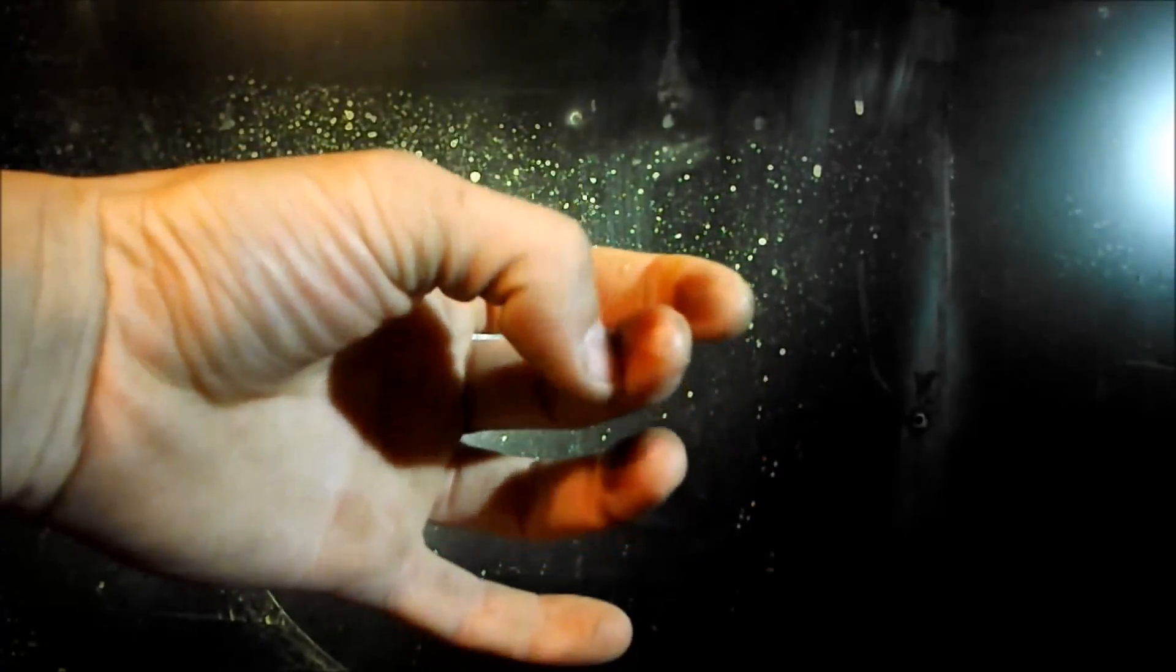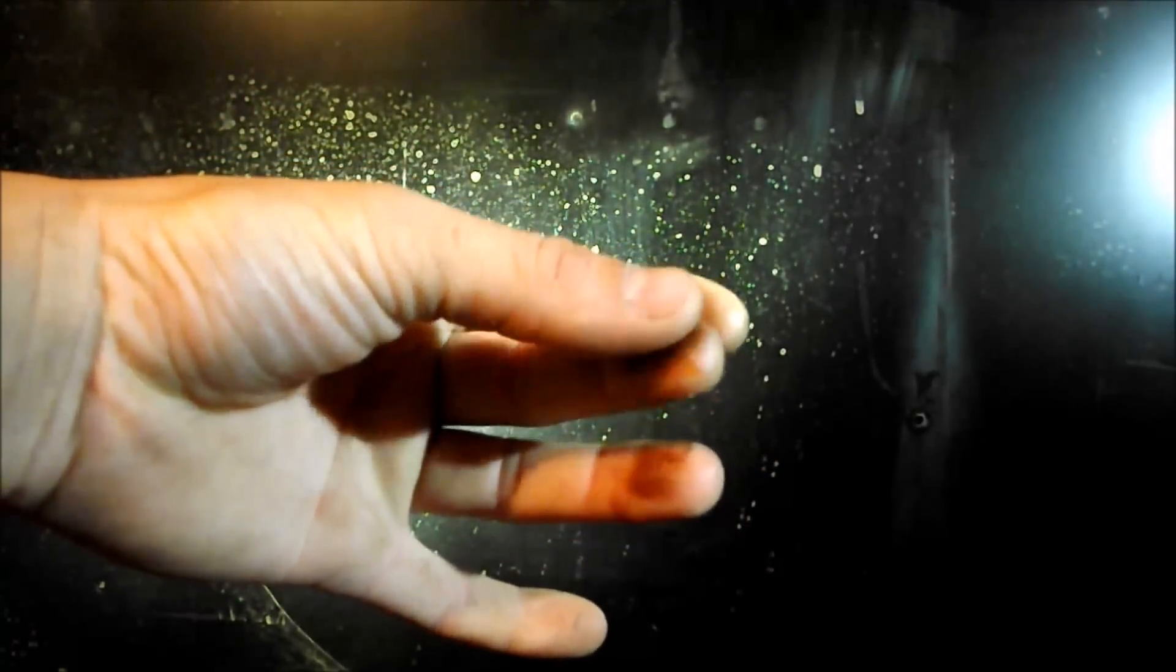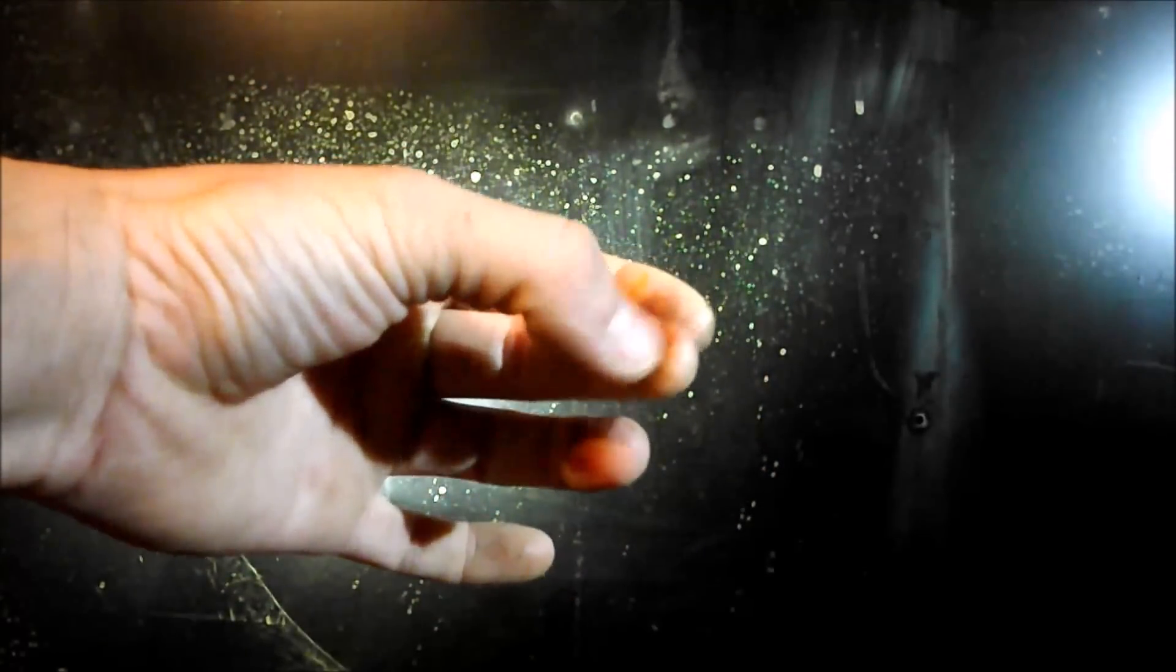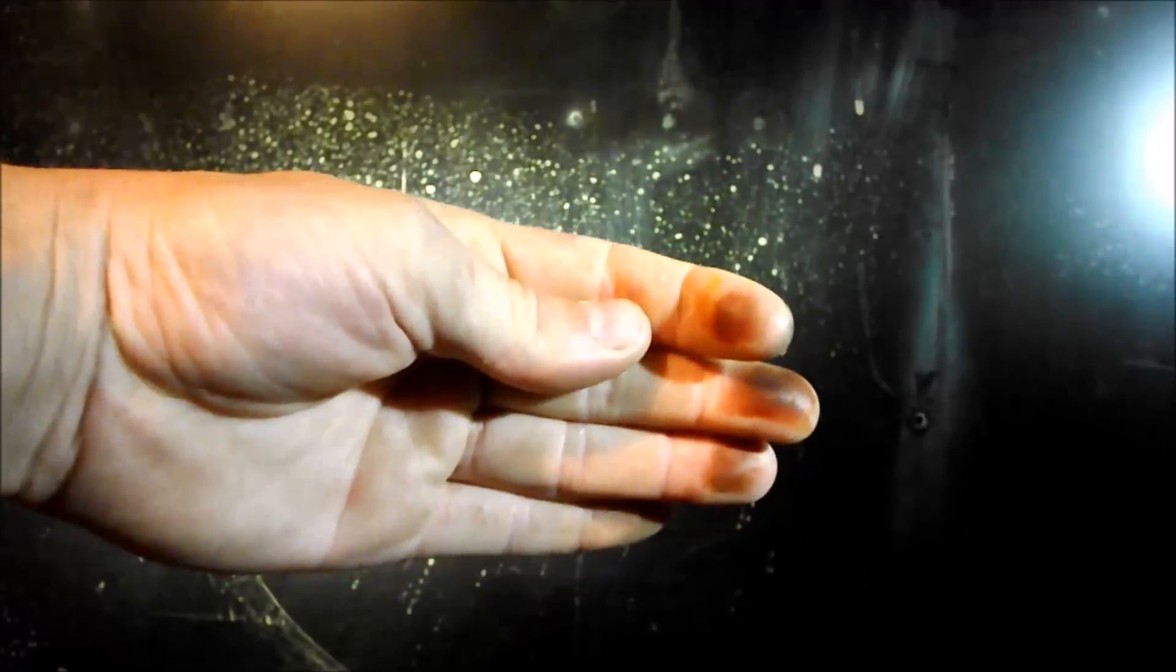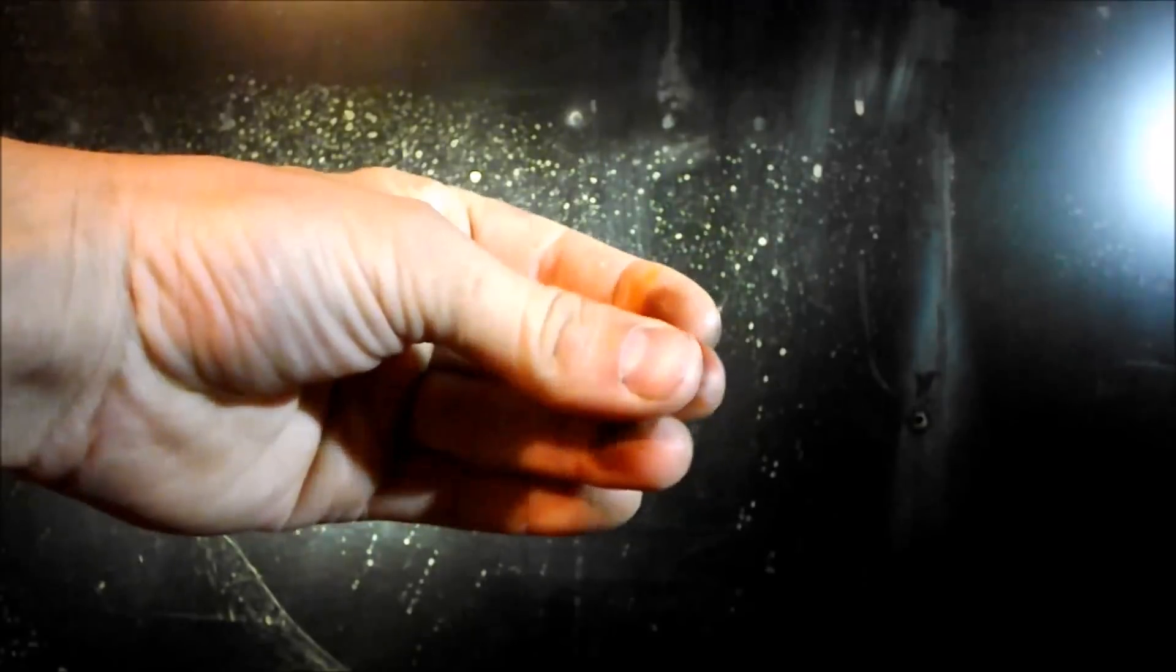This happens to chemists quite often. If you accidentally touch something that had a drop of silver nitrate on it, it gets on your skin. You don't realize it till later and it leaves your skin with a dark mark like you can see here, and it is considered almost impossible to remove.